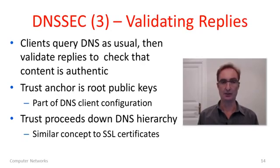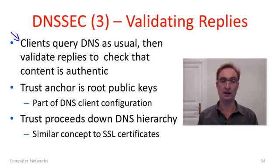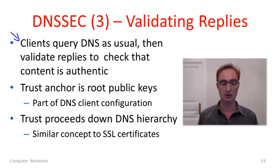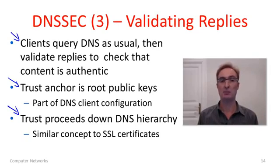The interesting question really has to do with validating all of the replies. When a client gets the DNS replies, it would like to validate them to see that it actually has the correct binding. To do this we're going to use a method similar in some ways to the certificate hierarchy in the PKI used for web security with SSL. Clients assume a trust anchor to be the root of the DNS tree — the public keys for the root of the DNS tree — as part of the DNS configuration, in the same way that you have IP addresses for the root servers. Trust then proceeds down the DNS hierarchy, and from one level we can check signatures for the next lower level, and so forth until we get to the level we want.